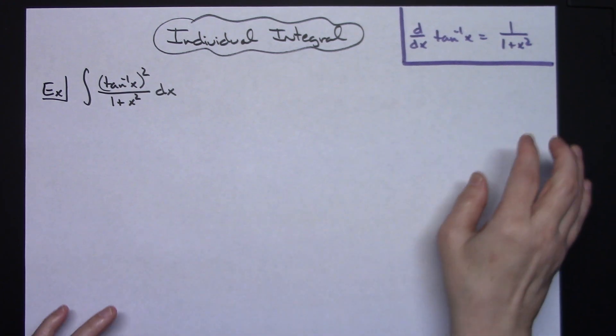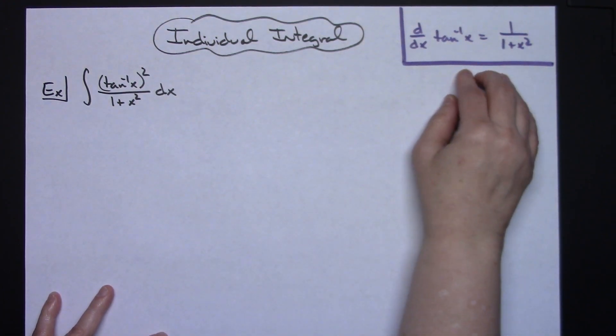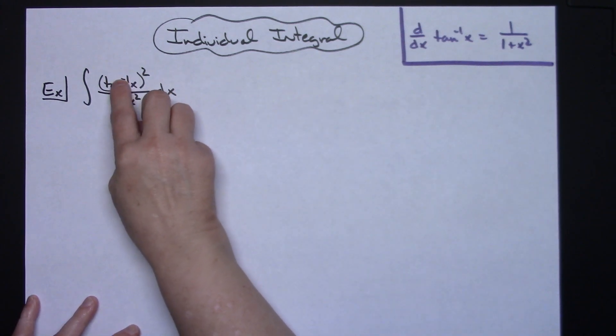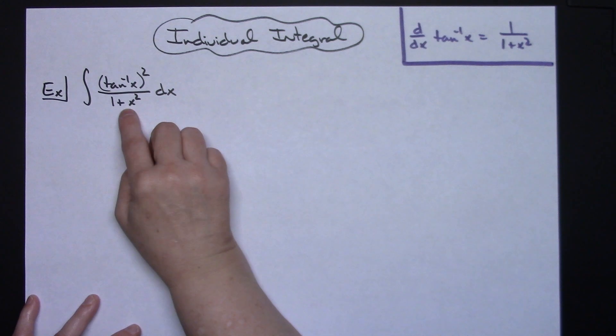Hopefully as help here, I've got the derivative of the inverse tangent in this top right corner: 1 over 1 plus x squared. Hopefully that will help you pick your u so you can see that the 1 plus x squared is going to be what's going to cross out.